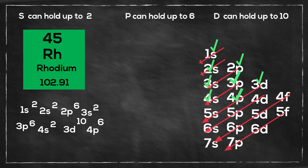And if you follow the normal rules, you would go 5s2, and then 4d7. But instead, rhodium is more stable at 5s1, and then 4d8.